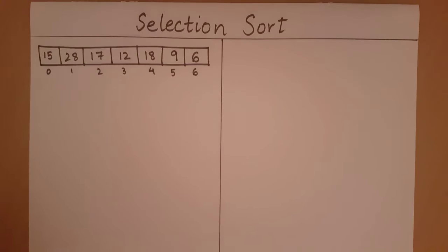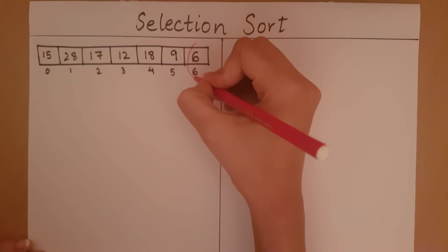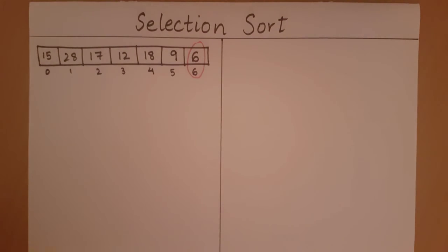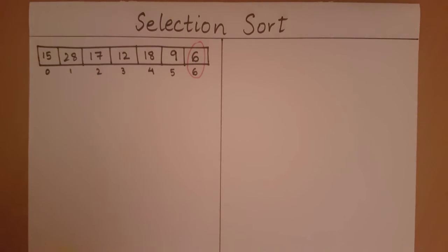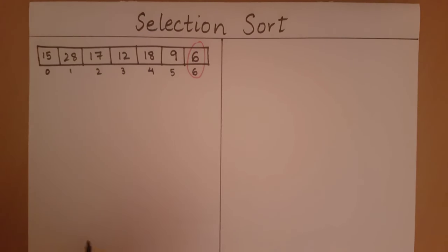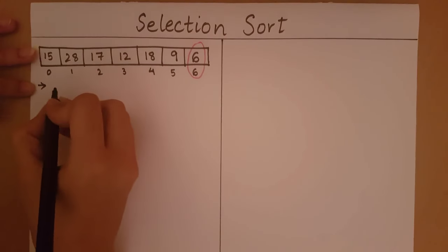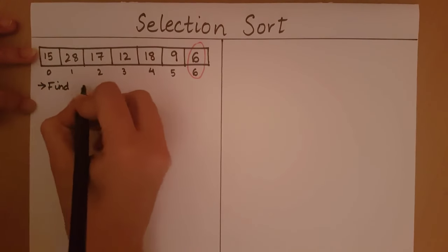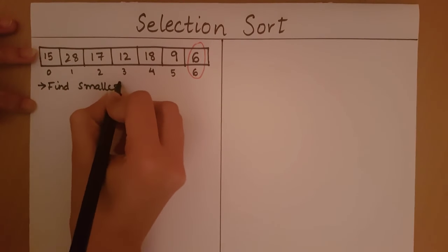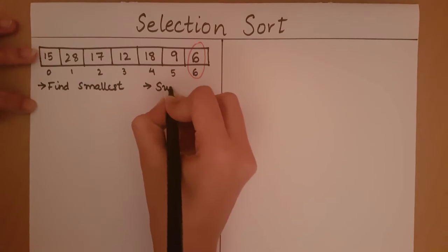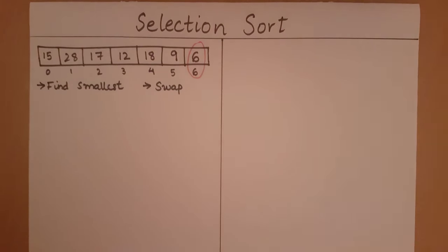In this case the smallest element is 6. After selecting the smallest element, it will swap this element with the element it started its search with. We started our search at the 0th element. The steps are: find the smallest element, then swap it with the element we started searching from.